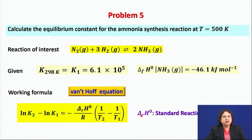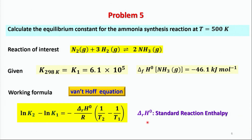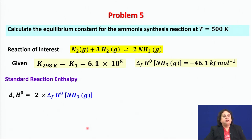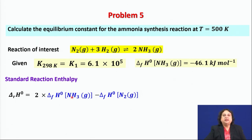Note that ΔRH° is the standard reaction enthalpy, and the Van't Hoff equation contains a negative sign, which holds as long as T₂ > T₁. To find ΔRH°, we write it as 2 × ΔHf°(NH₃, g), since 2 moles of ammonia are produced. We are multiplying 2 with the standard enthalpy of formation of ammonia gas.